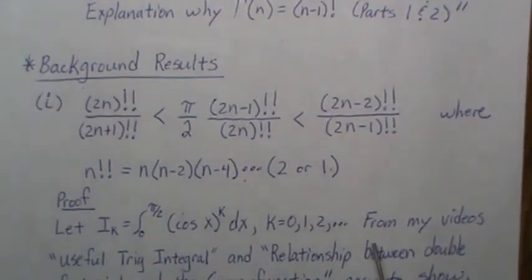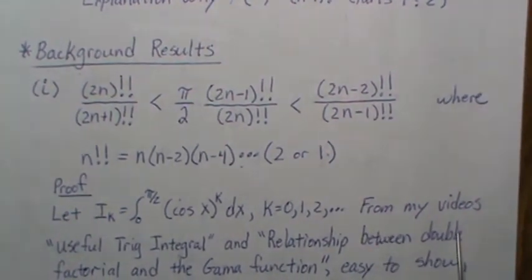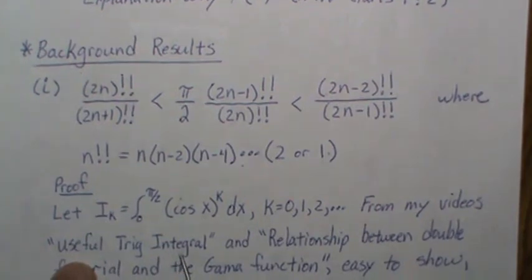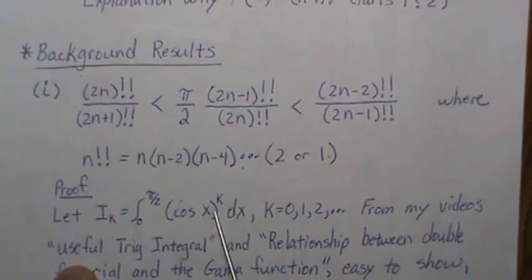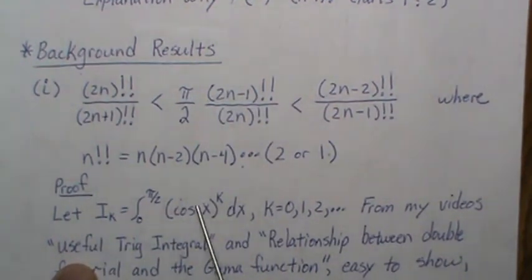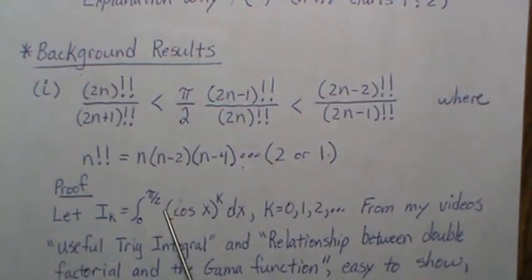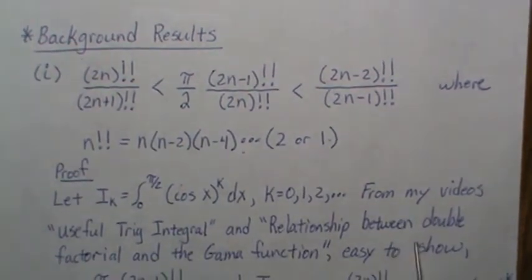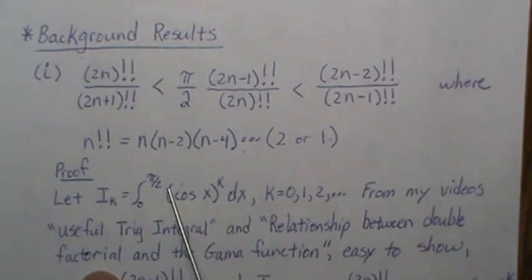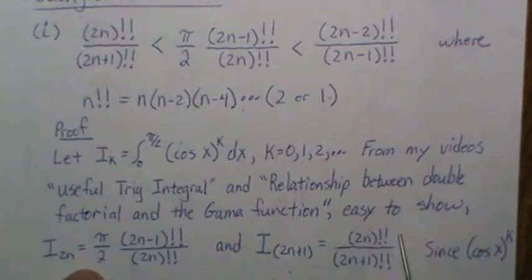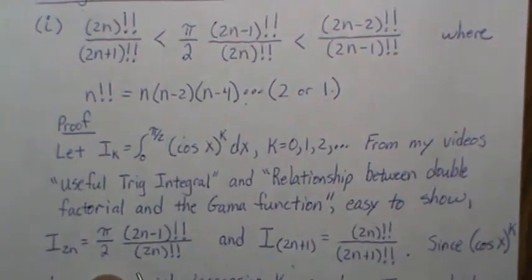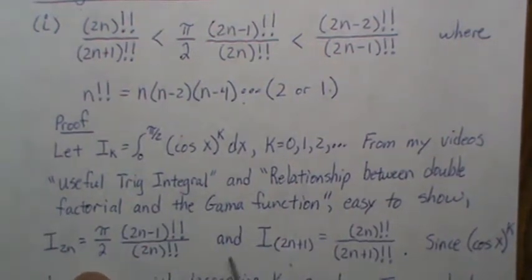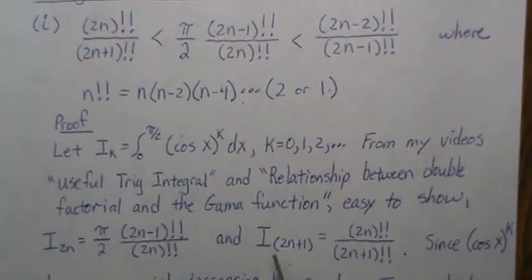Because of the length of the video, I'll point to other videos that prove the needed steps. From my video 'Useful Trig Integral' we prove an almost identical integral — there we go from 0 to pi, here it's 0 to pi over 2, but otherwise it's the same. Then I have a video on the relationship between the double factorial and the gamma function. Using those two videos, we get that I_{2n} equals this expression and I_{2n+1} equals this — one for even k and one for odd k.